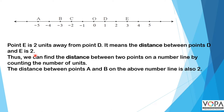Point E is two units away from point D, meaning the distance between D and E is two. You can see here: D is at one, E is at three. From D to two is one unit, and from two to three is one more unit, so from D to E is two units.